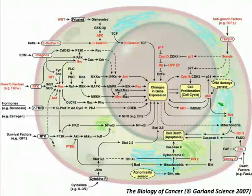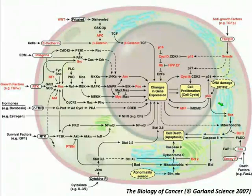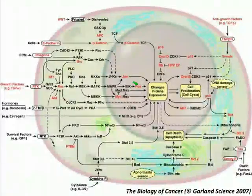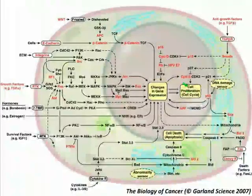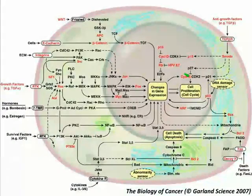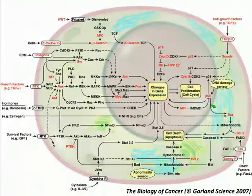The first slide shows how receptors on the cell surface for growth factors, survival factors, cytokines, as well as integrins and ecotherins—which signal to the cell attachment to the extracellular matrix and to neighboring cells—trigger a multitude of complex, branched, and partially redundant signal transduction pathways, which lead to the expression of transcription factors that drive the expression of gene batteries that propel the cell cycle and allow the cell to proliferate. We can also see how anti-growth factors such as TGF-beta signal through alternative pathways and can actually put brakes on cell cycle progression. Cells can also sense internal DNA damage through P53, and external death factors that trigger signaling pathways that can result in programmed cell death or apoptosis.